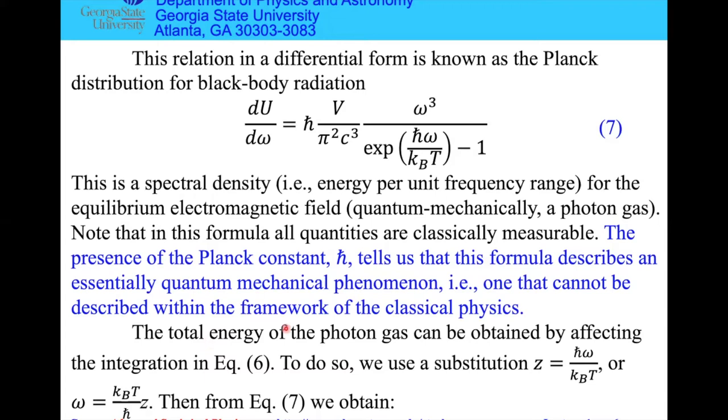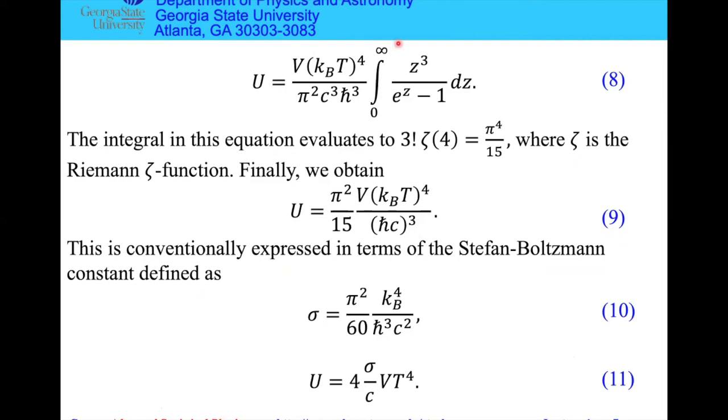To find the total energy of the photon gas by integration of this expression over omega, equation 6 on the previous slide, we use a substitution: z = ℏω/kbT. It's always done; the argument of transcendental function, exponential, is taken as a new variable. Then omega is kbT/ℏ multiplied by z. From this expression we obtain this energy of the electromagnetic field.